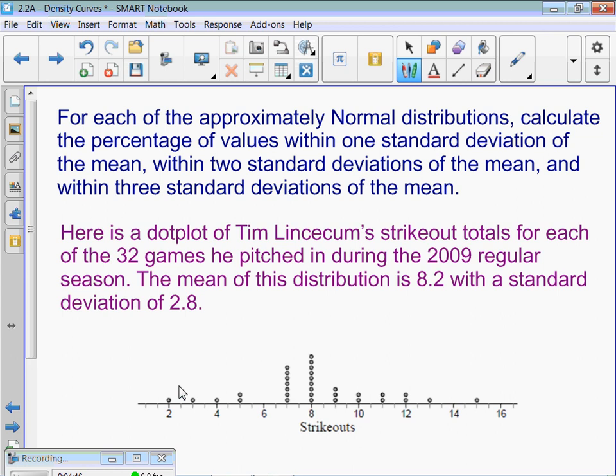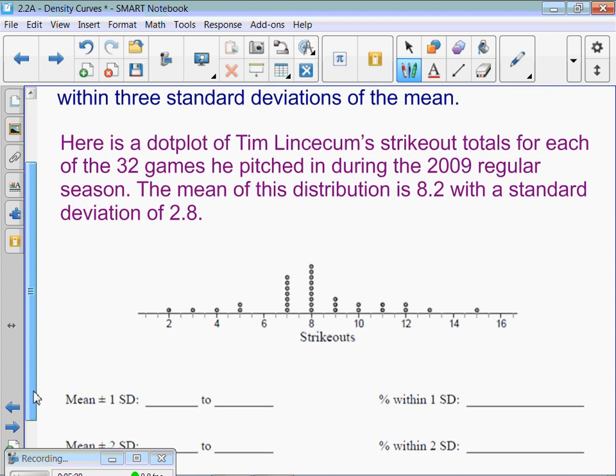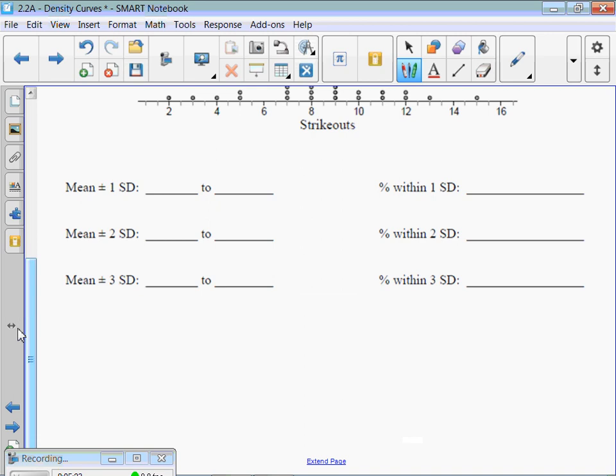For each of the approximately normal distributions, so notice they tell you that the rest of these are going to be normal, calculate the percentage of values within one standard deviation, within two standard deviations, within three standard deviations of the mean. Here's a dot plot of Tim Lincecum's strikeout totals for each of the 32 games he pitched during the 2009 regular season. The mean of this distribution is 8.2, with a standard deviation of 2.8.